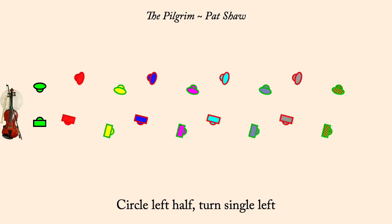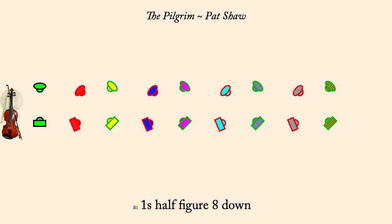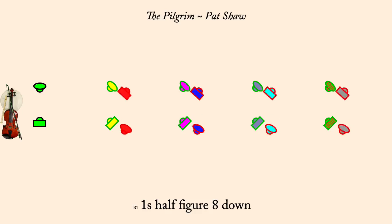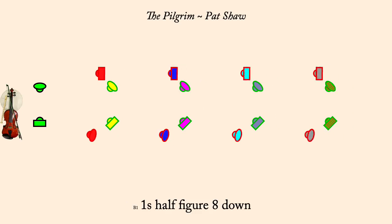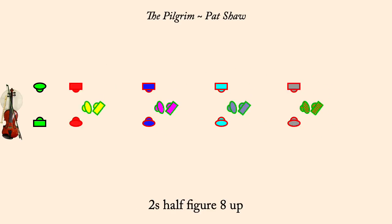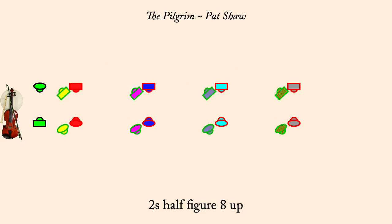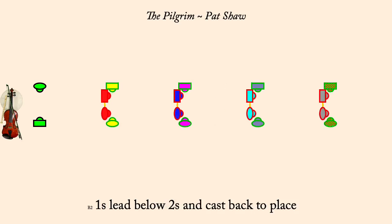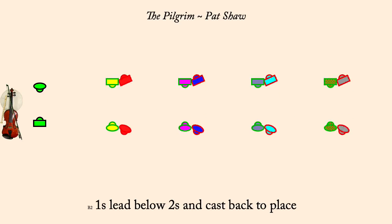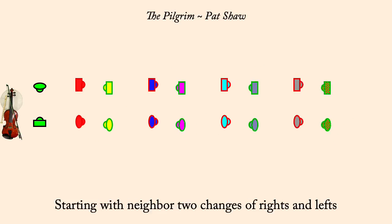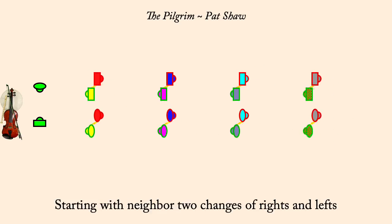Ones half figure eight down. Twos half figure eight up. Ones lead below twos and cast back to place. Face neighbor, two changes of rights and lefts.